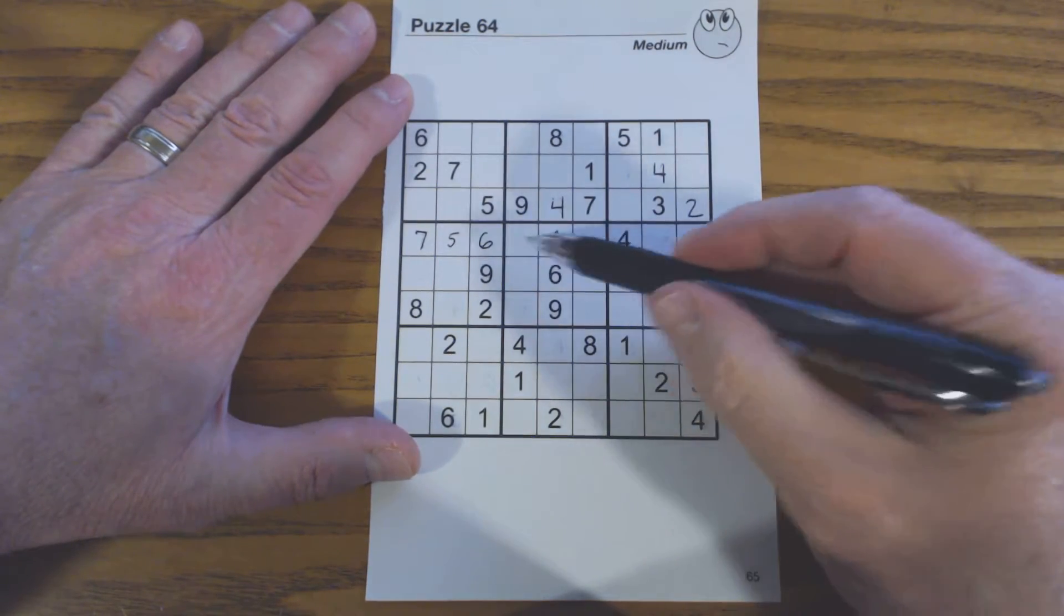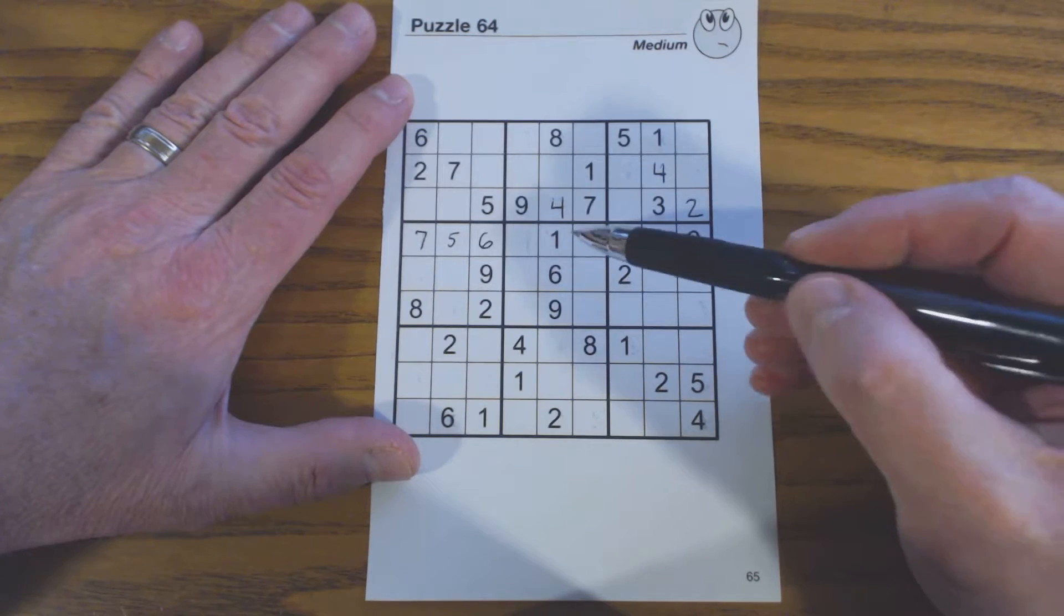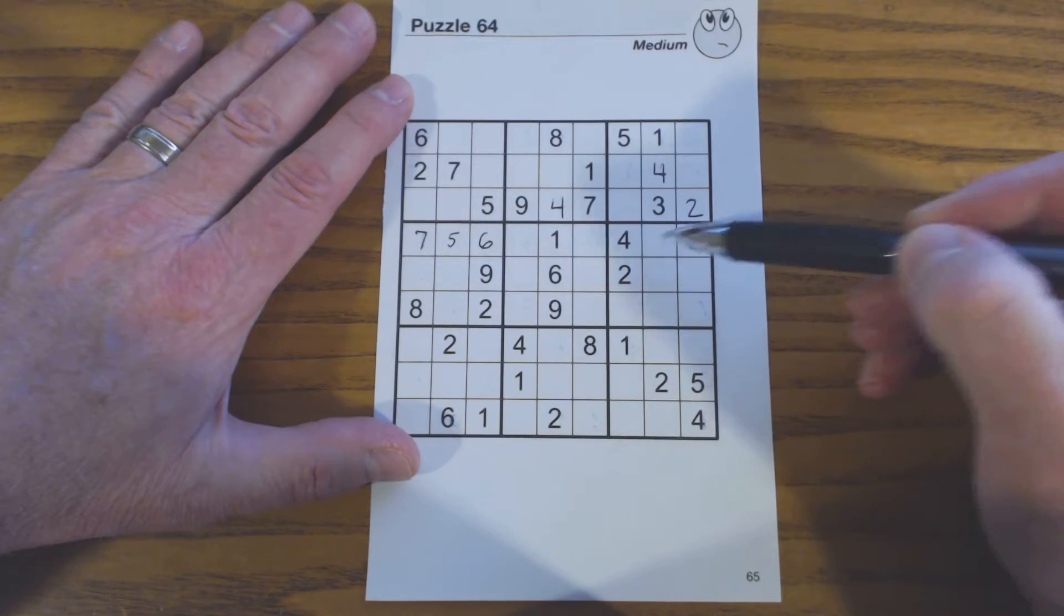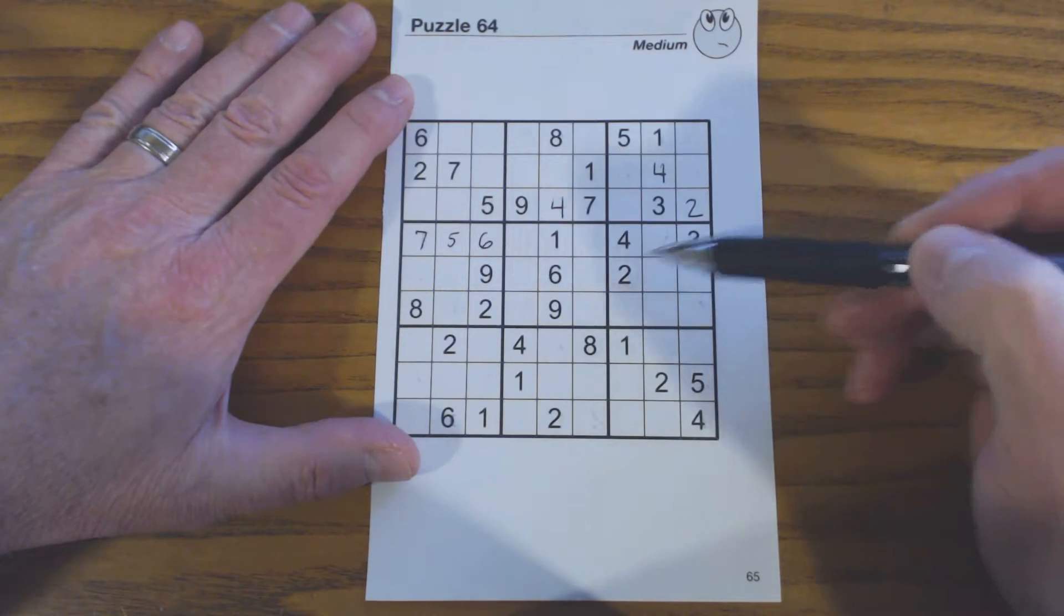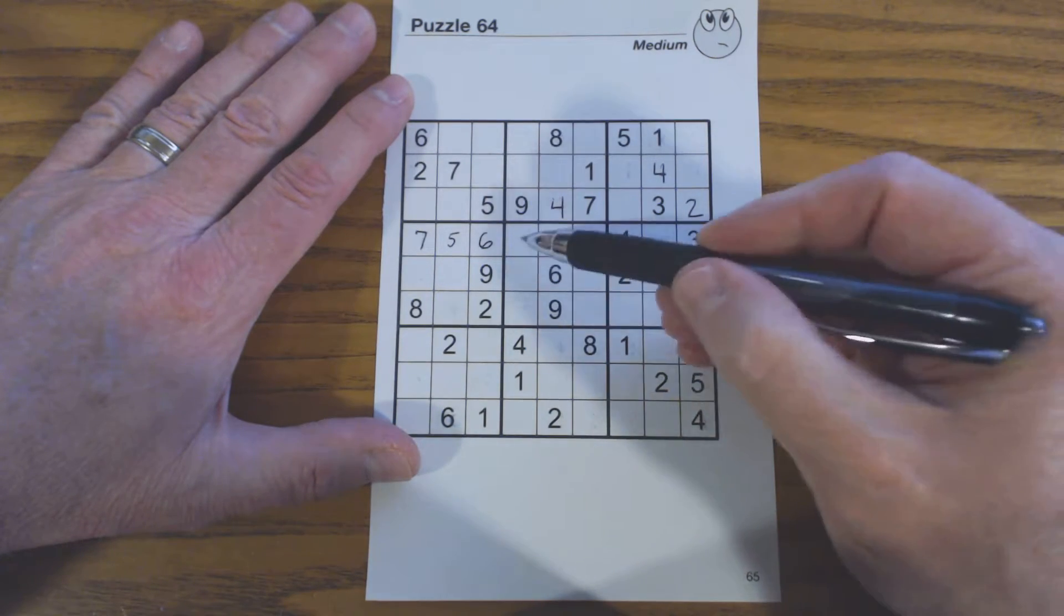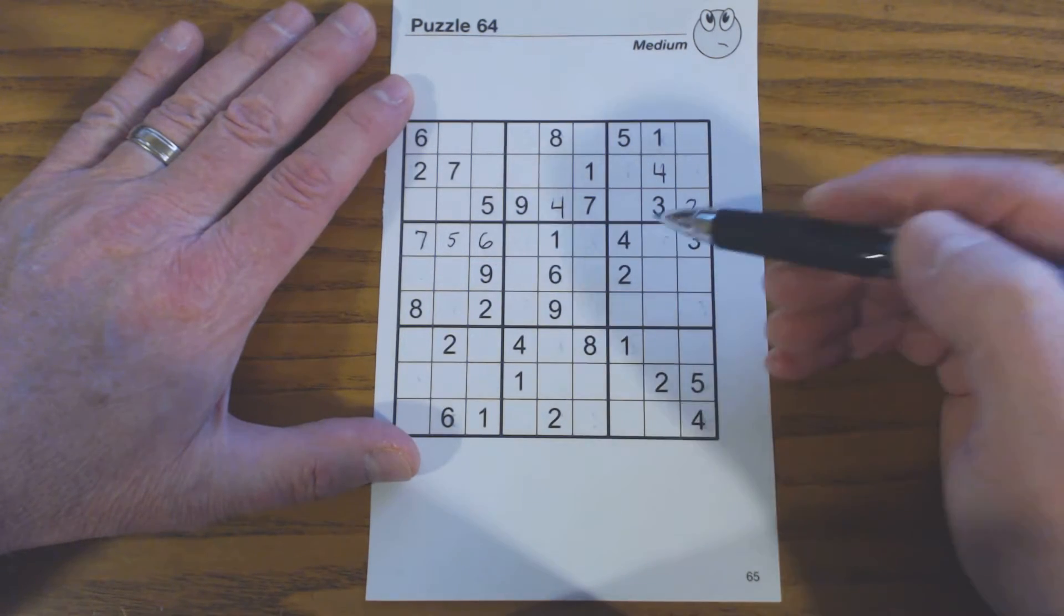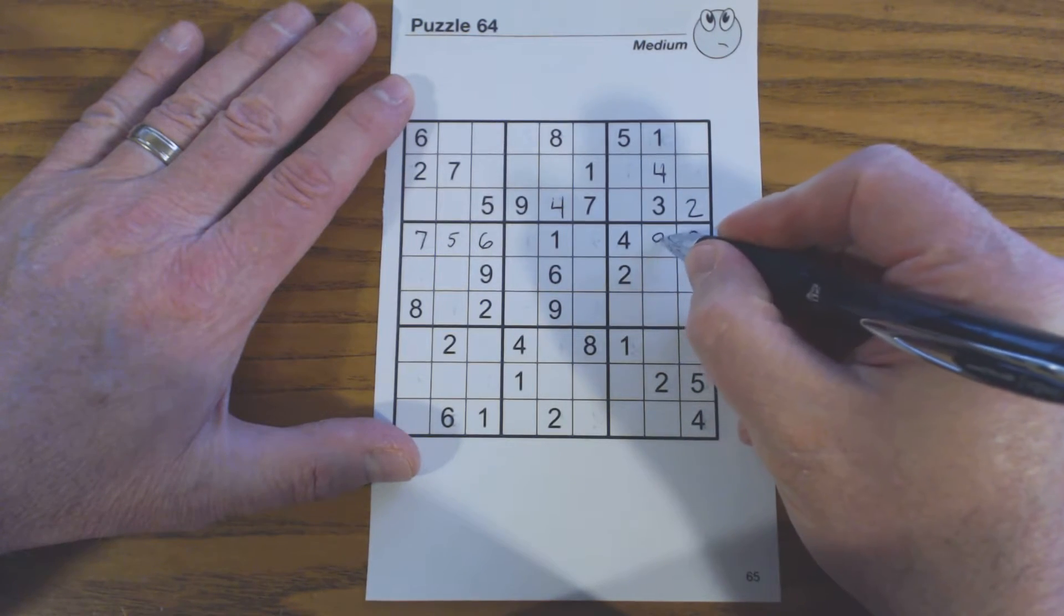Let's look at the rest of that row, now that we've been able to find those three numbers. 1, 2, 3, 4, 5, 6, 7, 8, 9. There's a 9 here, so neither of these cells can be a 9, so that's a 9 right there.